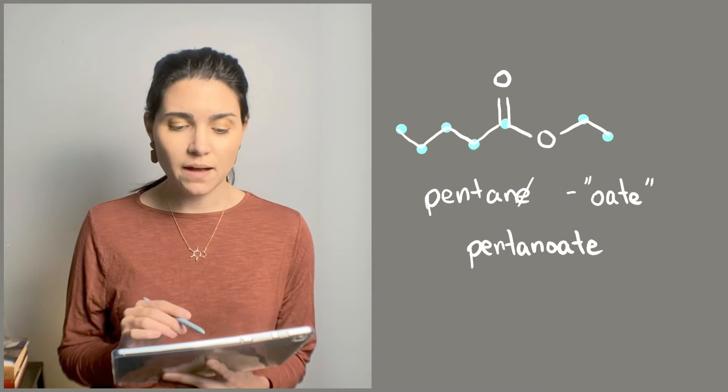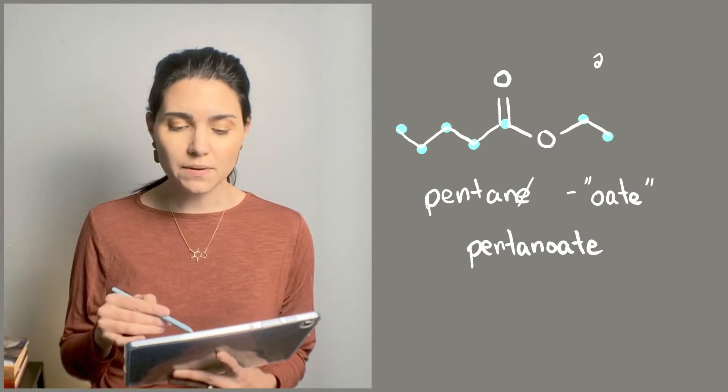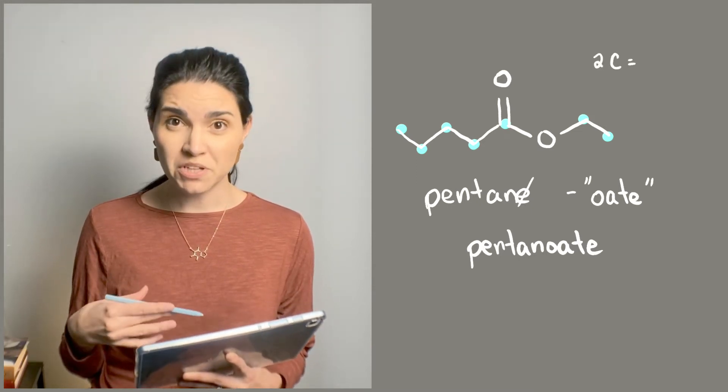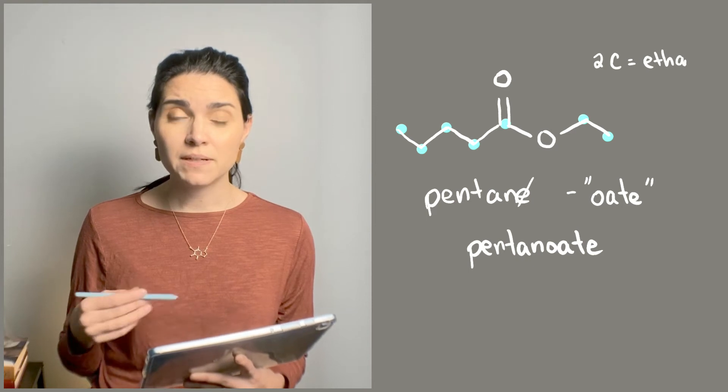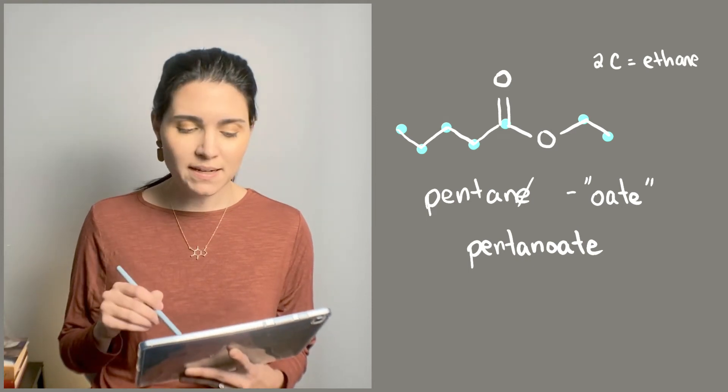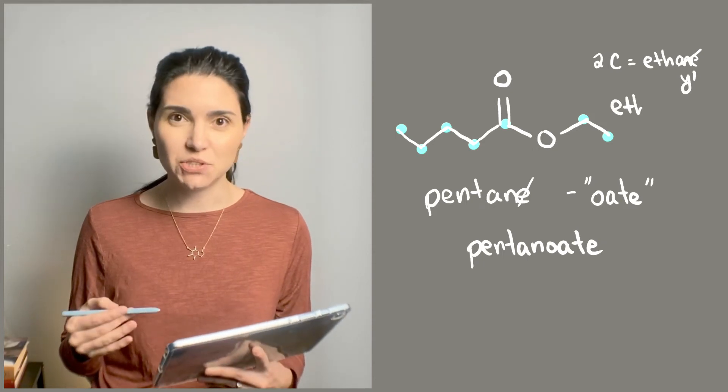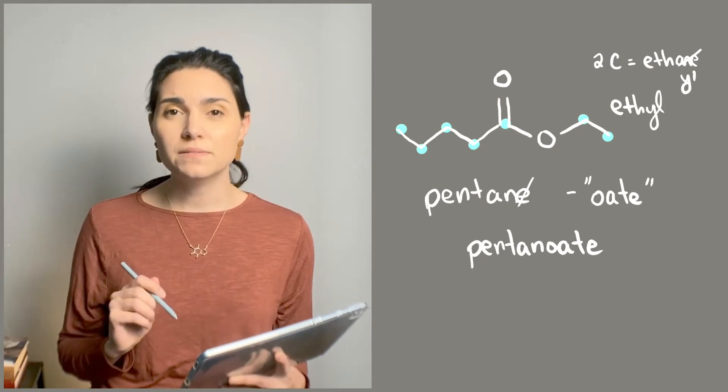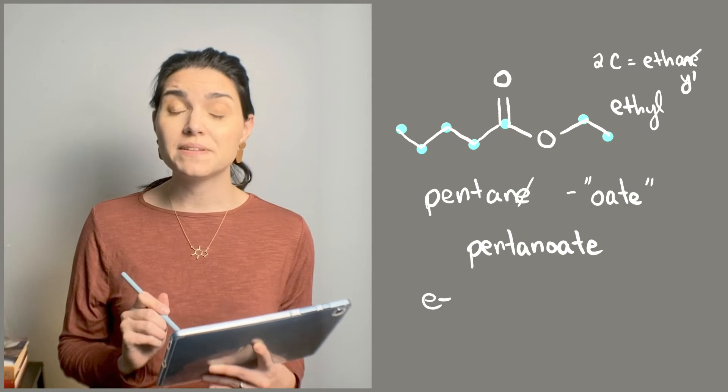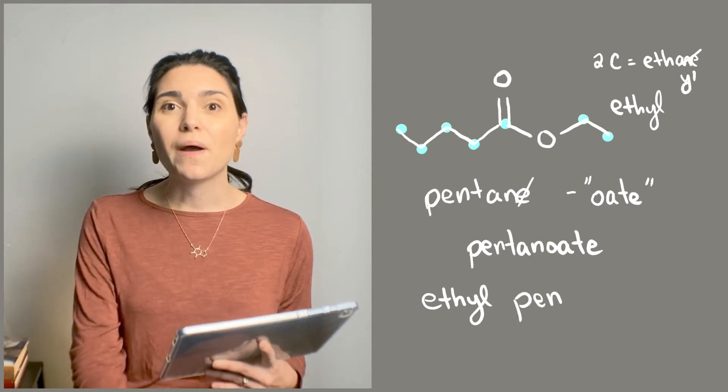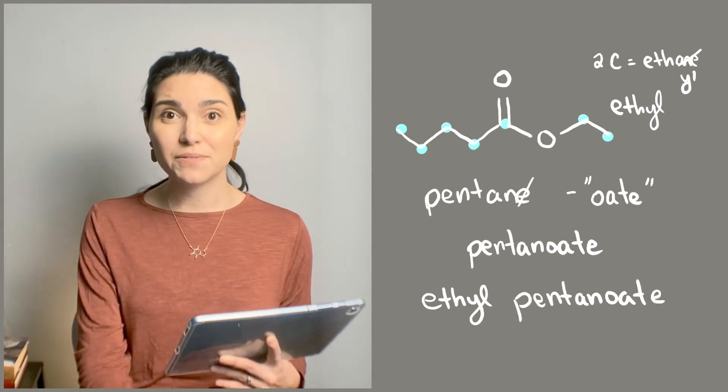We're going to name this part as an alkyl substituent. So to do that, we're going to take the name for a two carbon chain, which is ethane, and we're going to take the ane off of it and add yl, Y-L. So that becomes an ethyl substituent. We're going to place ethyl in front of pentanoate with a space in between. So ethyl pentanoate is the full name.